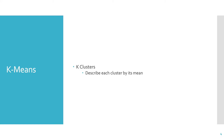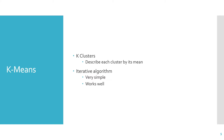K-Means is a common clustering algorithm, and the one you're going to learn about in this class. What we're trying to do is separate the data into K clusters, and we're going to describe each cluster by its mean. K-Means is so named because the result of running K-Means is K cluster means.